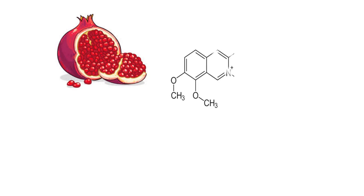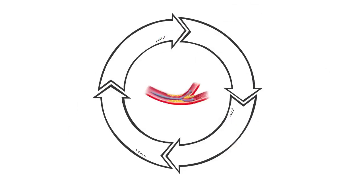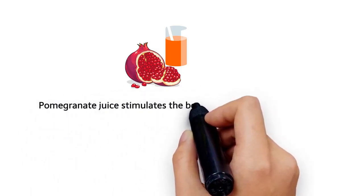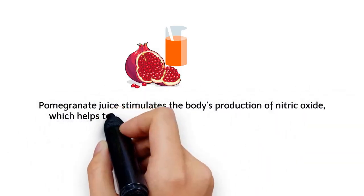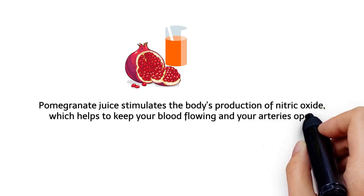Eight: Pomegranate. This fun fruit contains phytochemicals that act as antioxidants to protect the lining of the arteries against damage. Pomegranate juice stimulates the body's production of nitric oxide, which helps to keep your blood flowing and your arteries open.